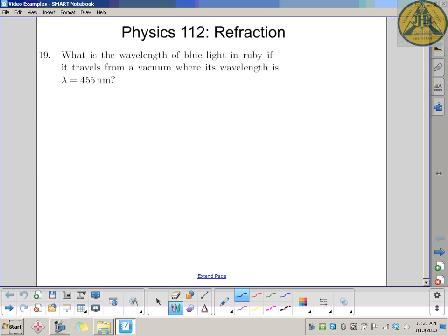To note, we're going to be using the index of refraction for ruby from our notes. That index of refraction is specifically for yellow light, but we're just going to apply it to all wavelengths of light to keep it simple.